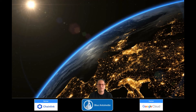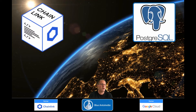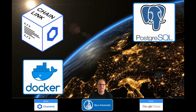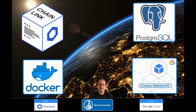Hi everyone, it's me, Robert here. And in this video, I'm going to show you how to set up a Chainlink node by running the node itself, as well as its Postgres database on separate Docker containers. With this approach, you can run your node in the cloud without relying on an expensive database service, and you also can save time by utilizing a container-optimized image. If you think that sounds interesting, then let's jump right into it.